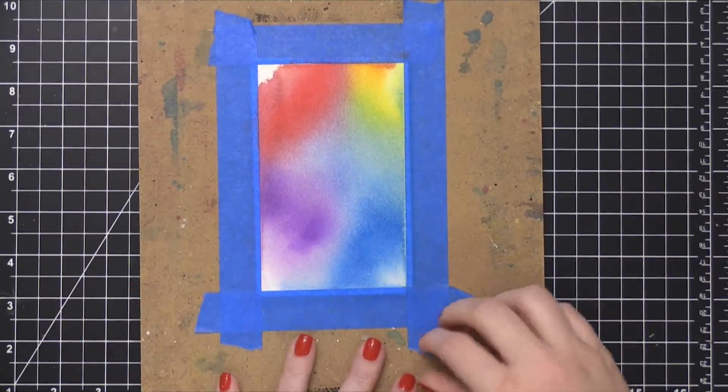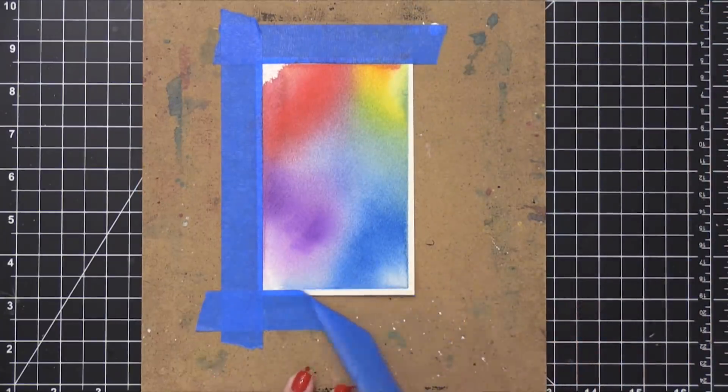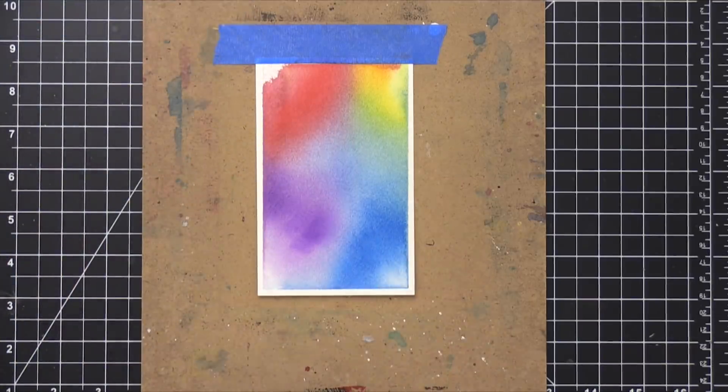So here's my watercolor background that I created a couple weeks ago, and it's actually stayed on the board here. I haven't taken it off yet. So the first thing I'm going to do is remove it from the board and trim it down.